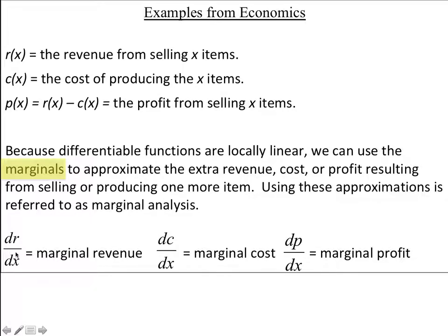The marginal revenue is the derivative of the revenue function at a particular point — that is the amount of extra money you would get for selling one more item. It's a rate, measured in dollars per item. Likewise, the marginal cost is the derivative of the cost function at a particular value — that is our extra money per item that we need to spend to make it.